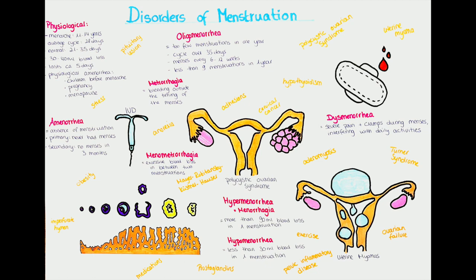Progesterone also leads to an increase in basal temperature. If after 10 days there is no implantation, the corpus luteum stops producing progesterone and starts degenerating. With progesterone levels declining, the endometrial lining will slough off, so menstruation occurs. This happens around day 1 to 5 of the menstrual cycle. The menstrual cycle is divided into the follicular and luteal phase; some divide ovulation as the ovulatory phase. Some women experience mittelschmerz as a unilateral pain indicating ovulation.